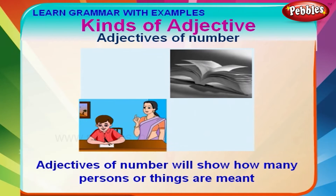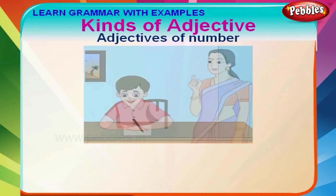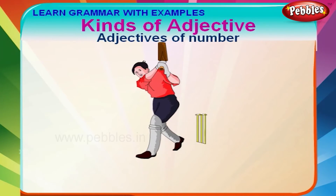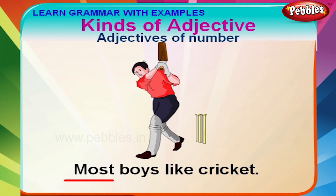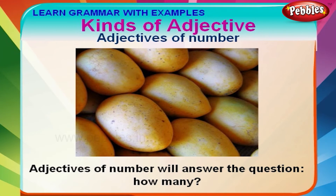Adjectives of number will show how many persons or things are meant, or in what order a person or thing stands. I have taught you many things. There are no pictures in the book. Most boys like cricket. Here are some ripe mangoes. Adjectives of number will answer the question: how many?